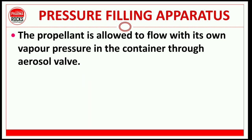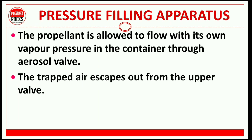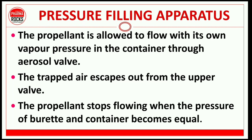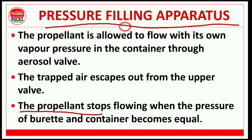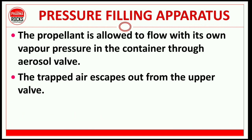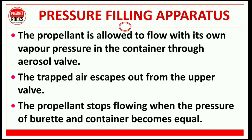In the pressure filling apparatus, the propellant is allowed to flow by its own vapor pressure into the container through the aerosol valve. The trapped air escapes out from the upper valve. The propellant stops flowing when the pressure of the burette and the container becomes equal.